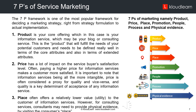Price has a lot of impact on the service buyer's satisfaction level. Often paying a higher price for information services makes a customer more satisfied. It is important to note that information services being all the more intangible, price is often considered a proxy for quality, and quality is a key determinant of acceptance of any information service. Number three, place: place often offers a relatively lower value or utility to the customer of information services.